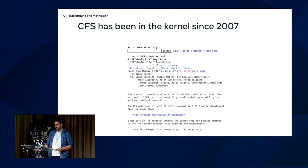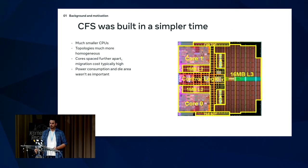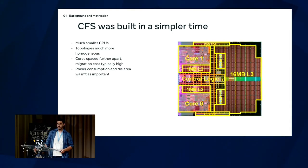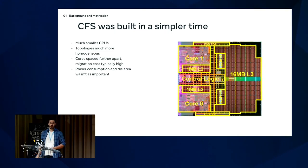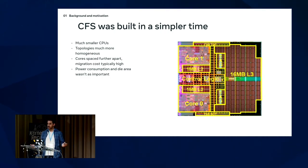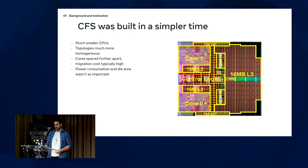Here's the email that Ingo sent to Linus when CFS was added. It's been doing a great job and changed a lot since then. But when CFS was first added, it was a very different tech landscape. CPUs were much smaller, topologies were much more homogeneous — you didn't have P-cores and E-cores. Cores were generally spaced further apart, making migrations more expensive, and power consumption and die area weren't as important.